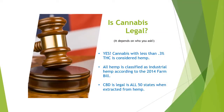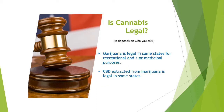One of the biggest concerns people often have is the legality of cannabis — there's so much confusion. So here are the facts: cannabis is legal when it has less than 0.3 percent THC, because that is when it is considered hemp. All hemp is classified as industrial hemp according to the 2014 Farm Bill. CBD is legal in all 50 states when extracted from hemp. Marijuana, on the other hand, is legal in some states for recreational and/or medicinal purposes.